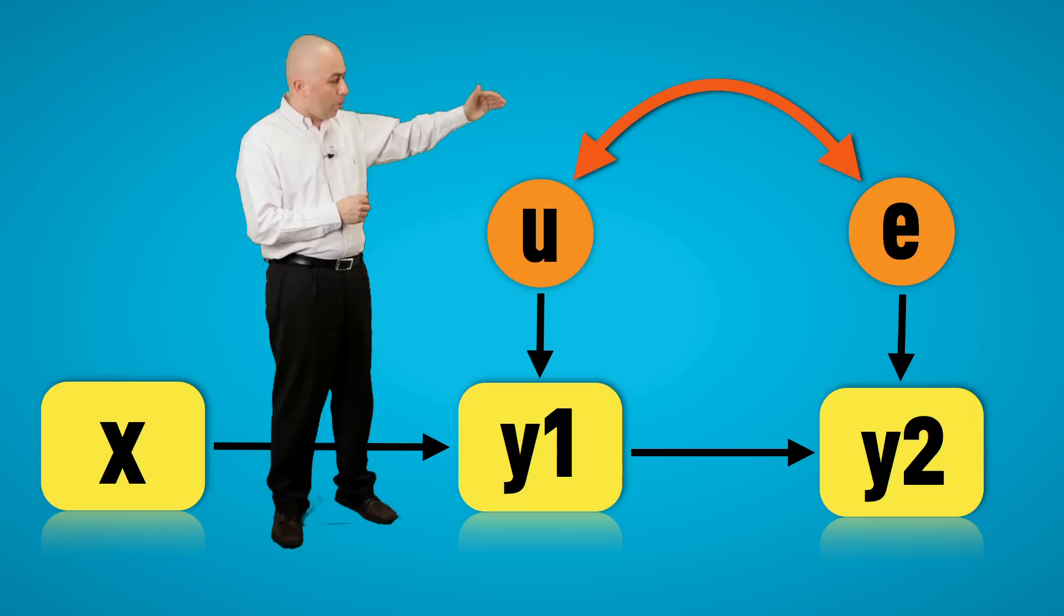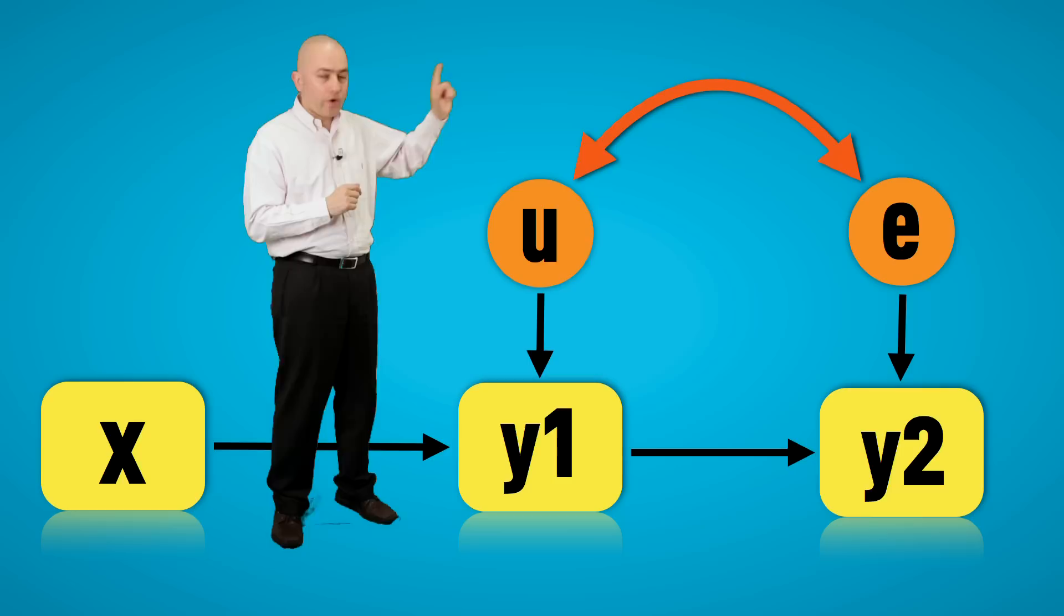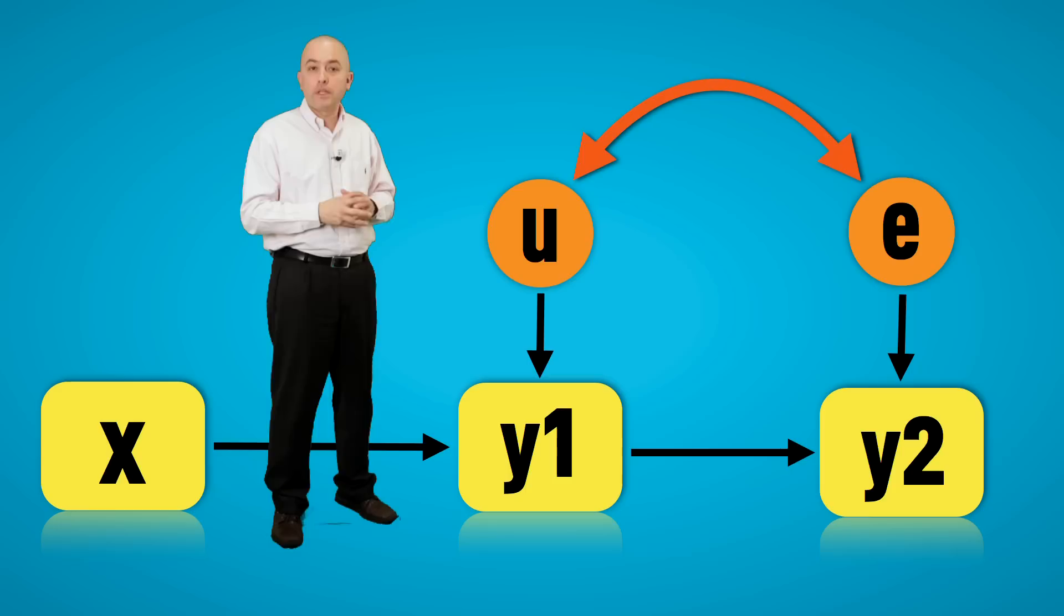By acknowledged, we mean that the causal structure of the data must be modeled correctly. That is, X causes Y1 and Y2, but there is a common cause linking Y1 to Y2 that must be modeled. This correlation between the two disturbances must actually be modeled in the estimation procedure. Very often, they do not do that, and if it is not done, the correlation then that is estimated between Y1 and Y2 will actually be misestimated. It will be wrong.